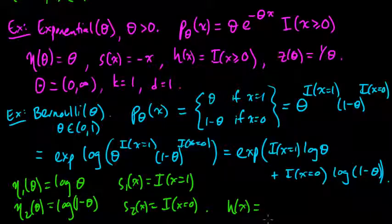So eta of theta will just take to be theta. S of x will take to be minus x. H of x, that sort of matches up with this part, we've got an x here, so let's take that to be this indicator. And now we're just left over with this theta, so let's make z of theta 1 over theta. And there, there we have it. This shows that this distribution is an exponential family.